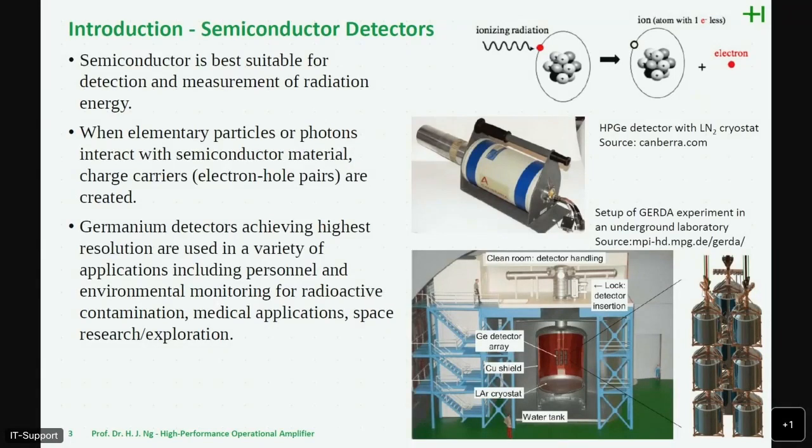That's why in a typical setup, in this HPGE detector, this is usually submerged in a liquid nitrogen cryostat that is cooled at a constant temperature of minus 180 degrees Celsius. This is also here the setup for the germanium detector array in an underground laboratory somewhere in Italy. You see here the detector arrays that is also cooled in a liquid argon cryostat and put in a water tank and then shielded from all interferences that can occur in the lab. So I'm not going too much into details because I'm also not a physicist. I would rather concentrate on the front-end electronics.